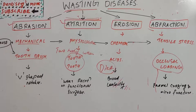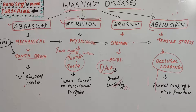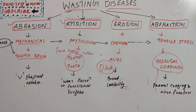Hello everyone, welcome back to another session in Dentistry and More. Today we have a simple topic: wasting diseases of teeth. Wasting diseases are nothing but loss of tooth substances — enamel, dentine, and cementum — due to various reasons. We have abrasion, attrition, erosion, and abfraction, each having different causes and different appearances.